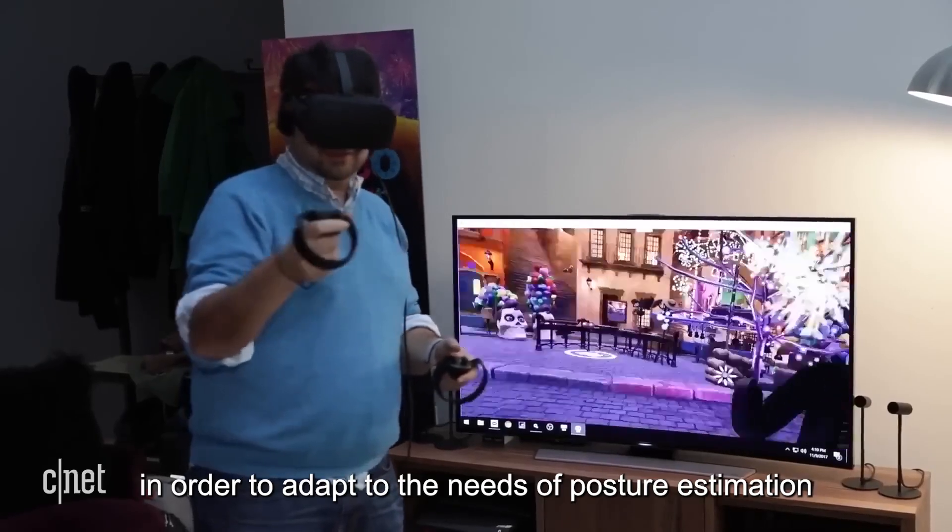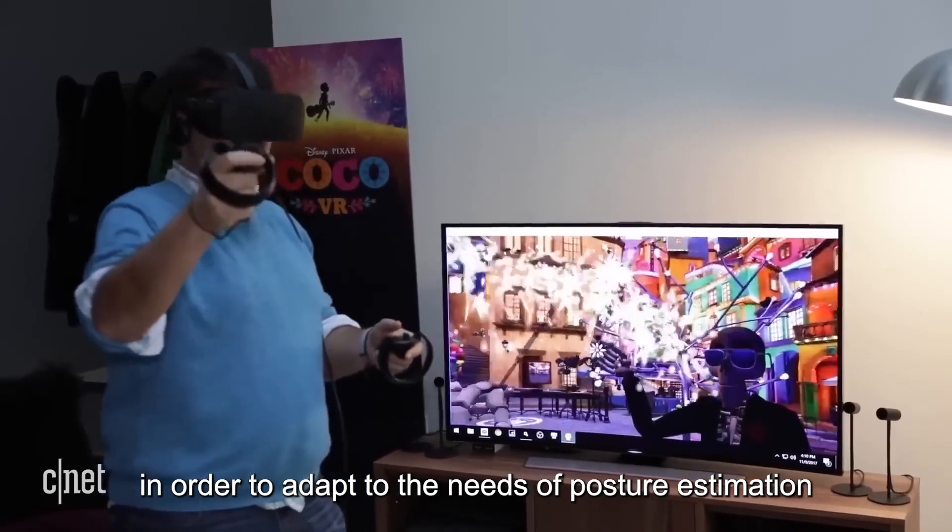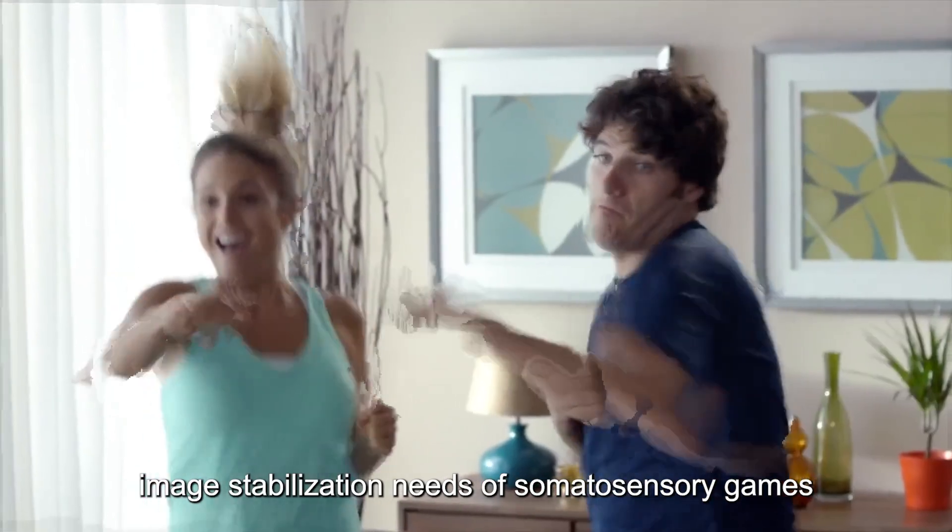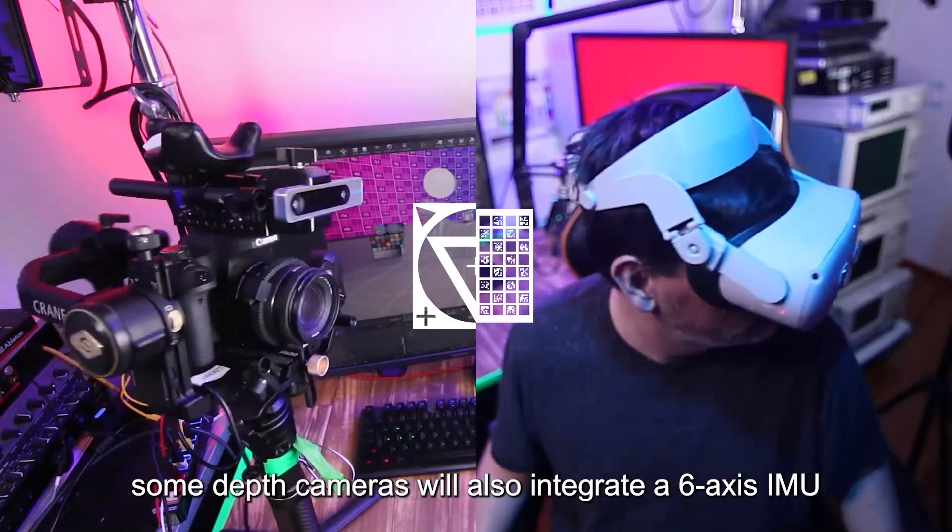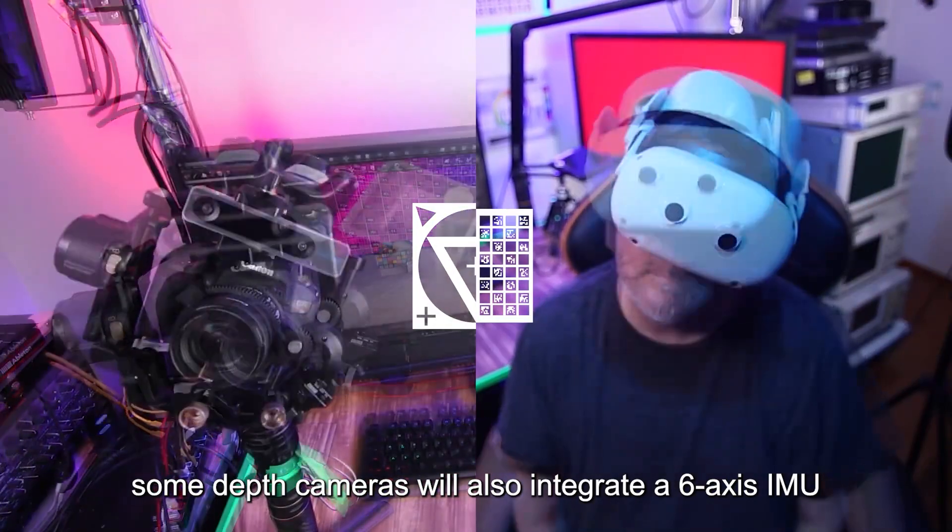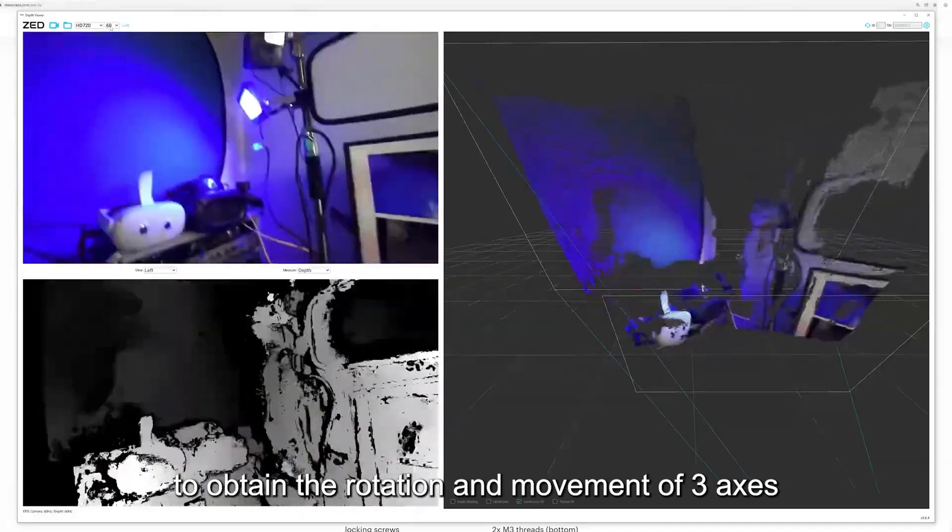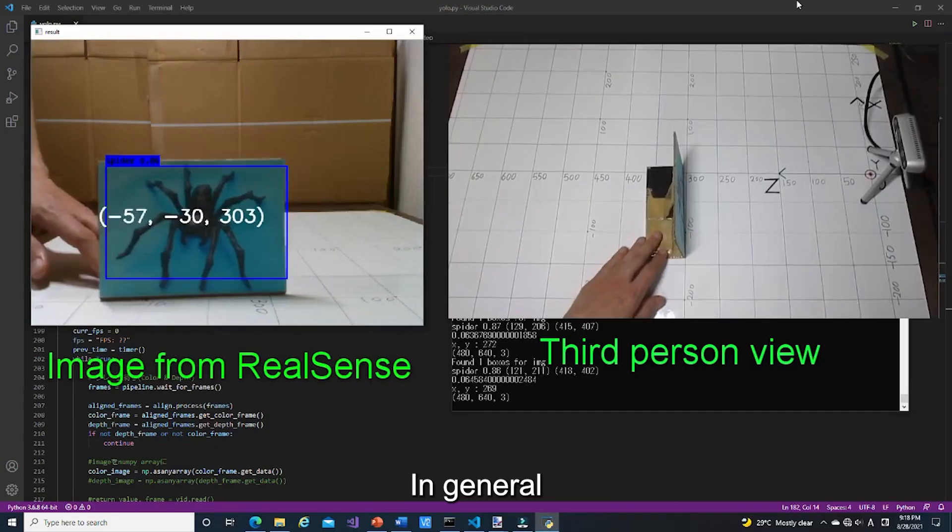In addition, in order to adapt to the needs of posture estimation, motion capture, and image stabilization needs of somatosensory games, some depth cameras will also integrate a 6-axis IMU to obtain the rotation and movement of 3-axis.